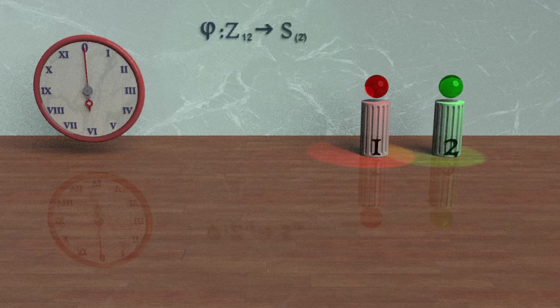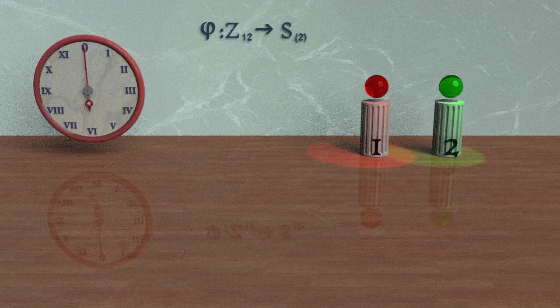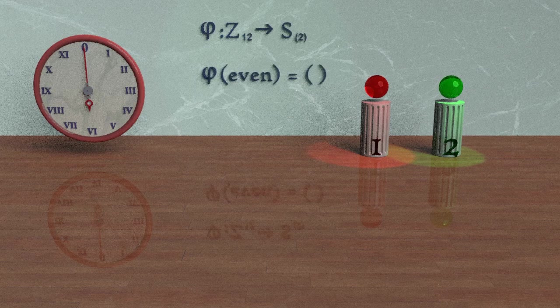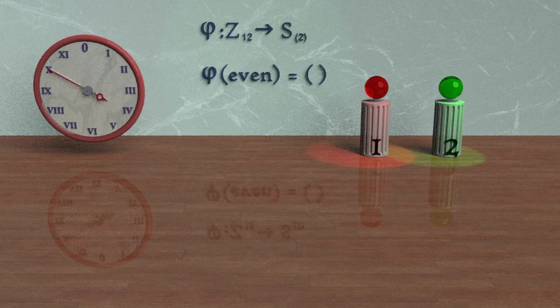Now let's introduce a function, a mapping which we will call phi. This function maps all of the elements from Z_12 to S_2. Let's define this function that all even elements in Z_12 get mapped to the identity element in S_2.